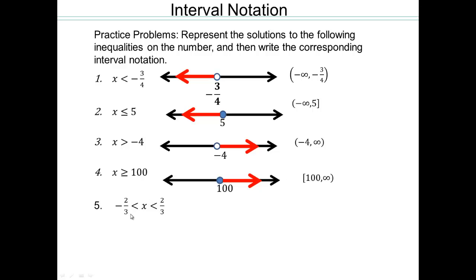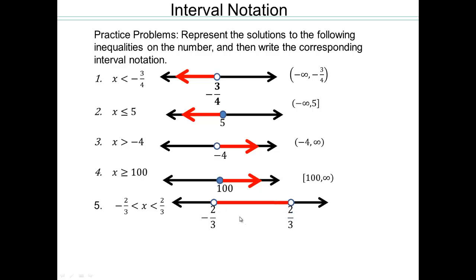For everything between negative two-thirds and two-thirds — strictly between — that gives holes at negative two-thirds and two-thirds with everything in between. So the interval notation is open bracket at negative two-thirds comma two-thirds, open bracket. You separate the two numbers with a comma in between — don't forget that comma.